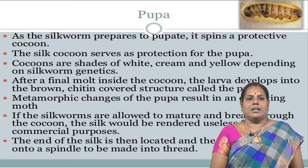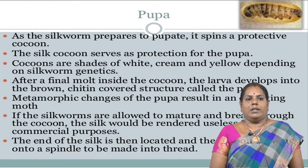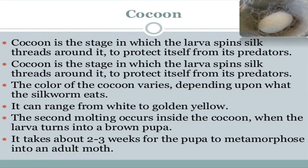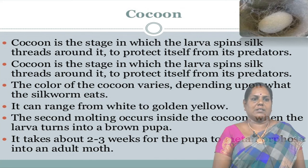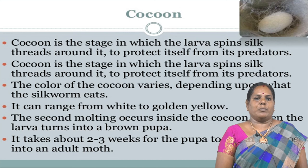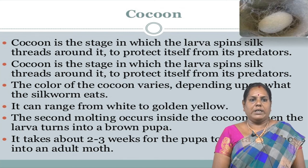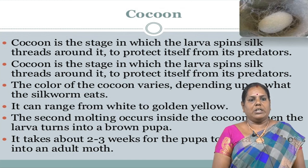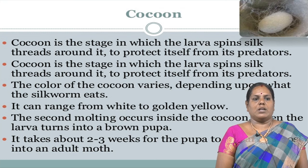The end of the silk thread is located and the cocoon is unwound into a spindle to be made into thread. The cocoon is the stage in which the larva spins silk threads around itself to protect from predators. The color of the cocoon varies depending on what the silkworm eats, ranging from white to golden yellow. The second moulting occurs inside the cocoon. When the larva turns into a brown pupa, it takes about 2 to 3 weeks for the pupa to metamorphose into the adult moth.